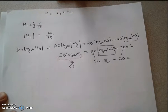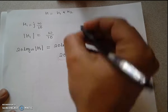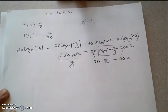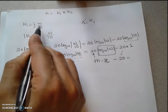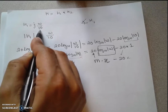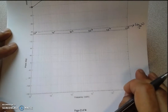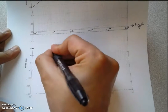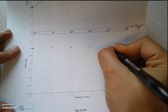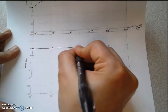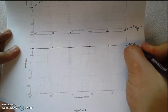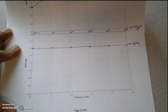Now for the phase angle of H1: H1 is j-omega over 10, which is purely imaginary with no real part. Therefore the angle is 90 degrees for all values of omega — a constant horizontal line at 90 degrees on the phase plot.